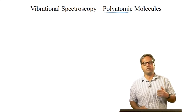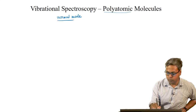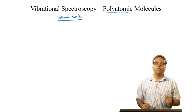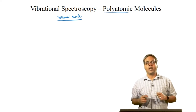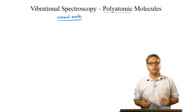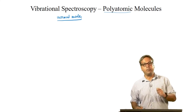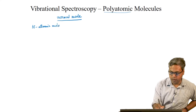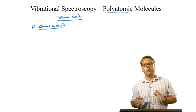We refer to these modes of vibration as normal modes. Because a diatomic molecule has only one mode of vibration, there is a single fundamental band. With polyatomic molecules, we can have a fundamental band associated with each mode of vibration, assuming that all the normal modes are non-degenerate and infrared active. An N-atomic molecule has multiple normal modes of vibration.